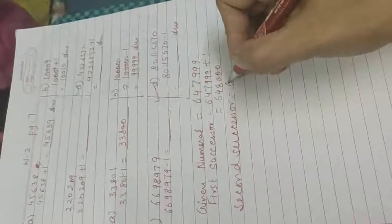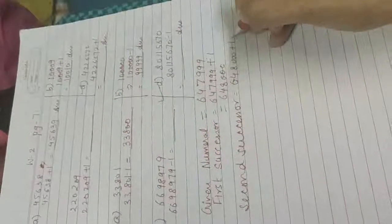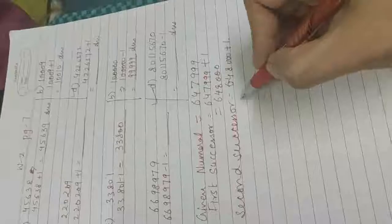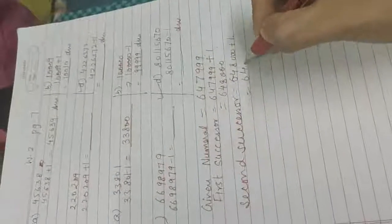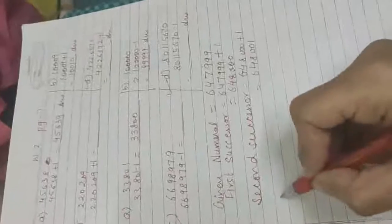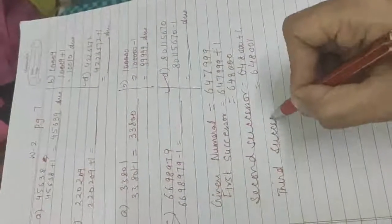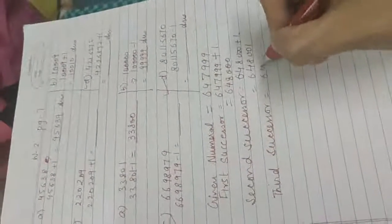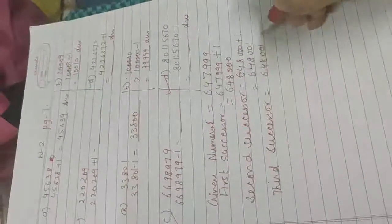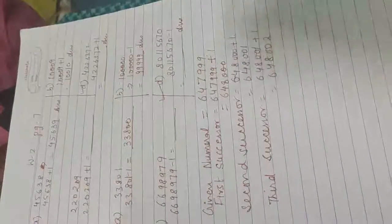The second successor means take the number above and add one more — we get the second value after adding. The third successor means take the second successor and add one again — we get the final answer. Question number five will be your homework.